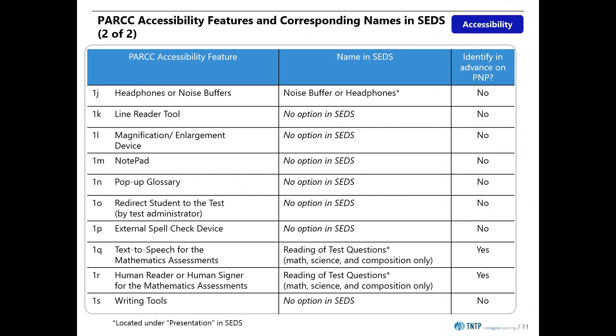On this slide, there is another interesting example. As we look at some additional accessibility features, we can see that the line reader tool does not have a name in SEDS and does not need to be identified in advance on the PNP. By the way, at the end of this webinar there is a link to the full crosswalk for all SEDS accommodations.